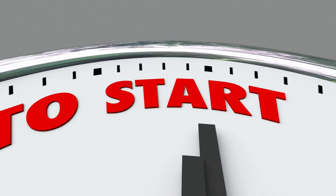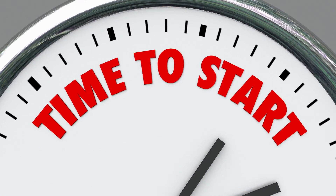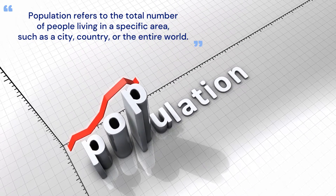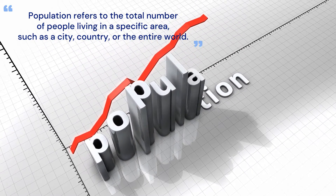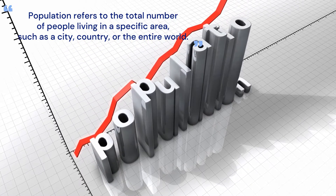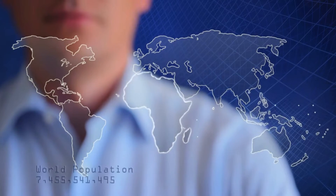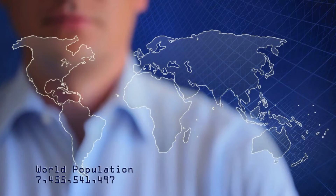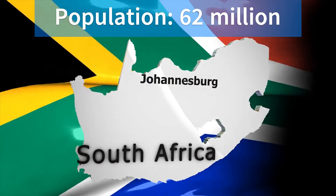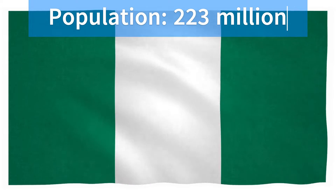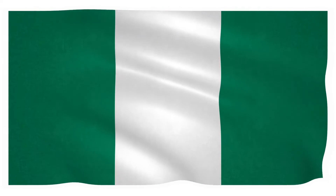Population refers to the total number of people living in a specific area, such as a city, country, or the entire world. As of 2024, the current world population is approximately 8 billion people. In South Africa, as of 2022, the population is around 62 million, while Nigeria has a much larger population of about 223 million, making it the most populous country in Africa.